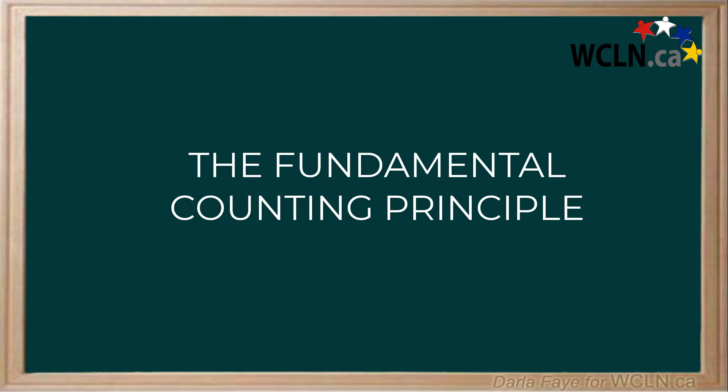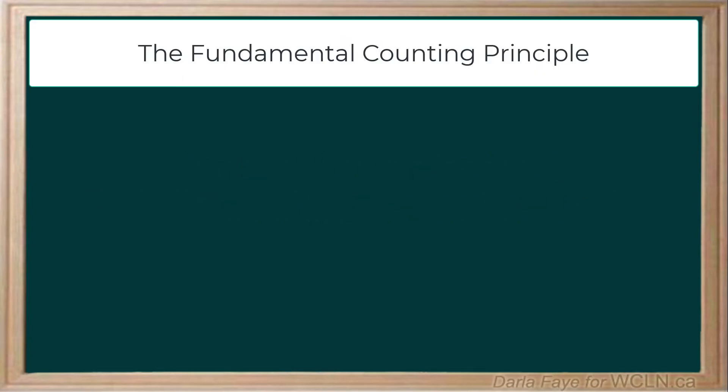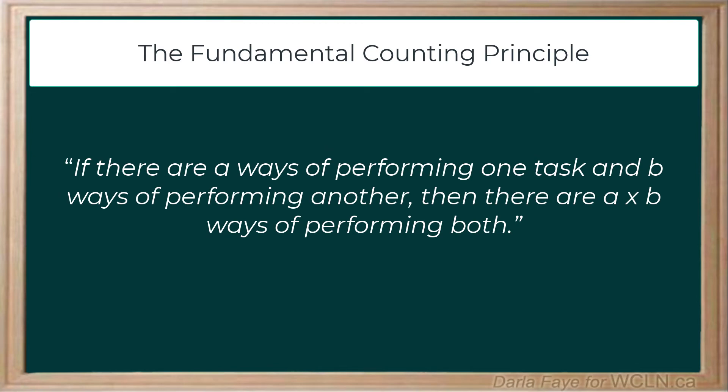Let's start by looking at its definition. The Fundamental Counting Principle says that if there are A ways to perform one task and B ways to perform another, then there are A times B ways of performing both. Or we could say that there are A times B ways to perform task A and task B.